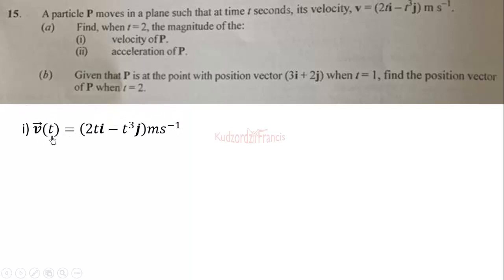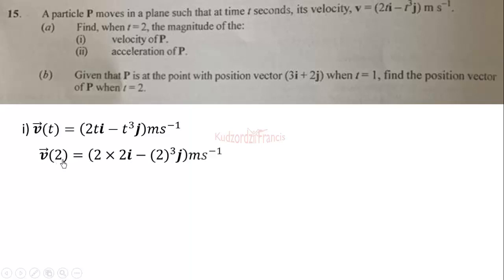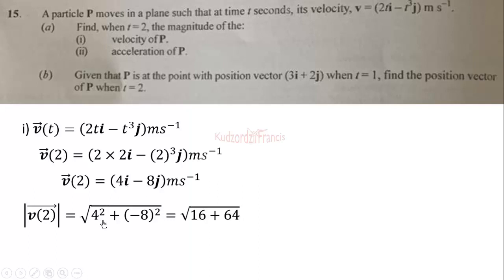We are given the vector function v(t) equals 2ti minus t-cubed j in meters per second. To find the magnitude of the velocity of P at t equals 2, we substitute t equals 2 into the function to get v(2) equals 2 times 2i minus 2-cubed j, which gives us 4i minus 8j in meters per second.